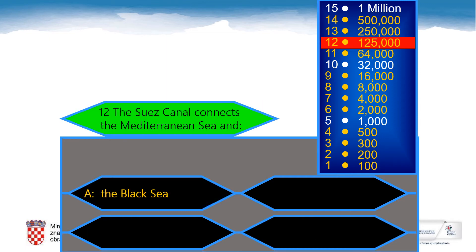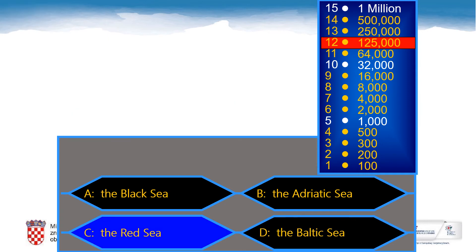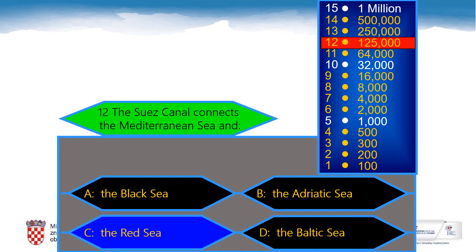Question number 12. The Suez Canal connects the Mediterranean Sea and — which sea? A: The Black Sea, B: The Adriatic Sea, C: The Red Sea, D: The Baltic Sea. And the correct answer is the Red Sea — 125,000 points. Well done.